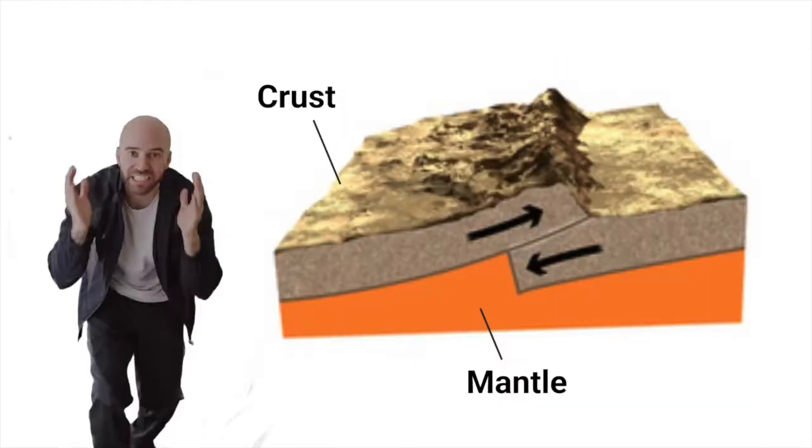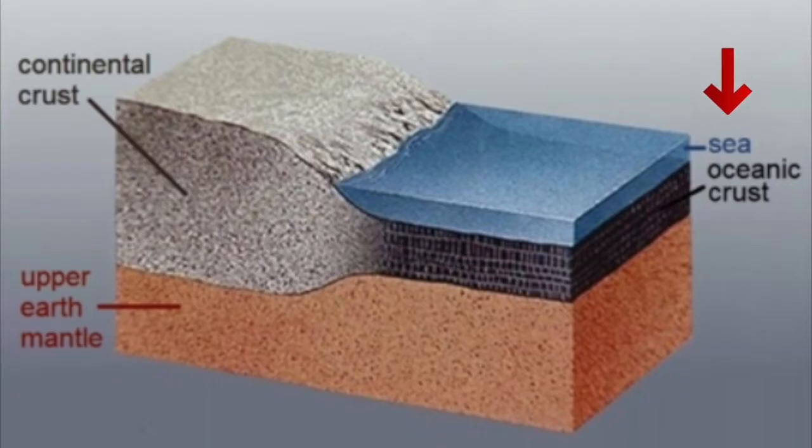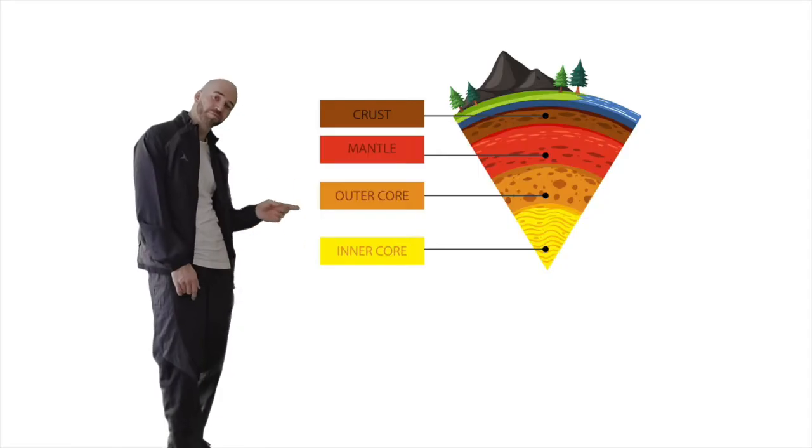Two types of crust on our planet: got the continental and the oceanic. One made of basalt, the other made of granite. Tectonic plates glide across the mantle. Oceanic is thin but dense, under the oceans is where it lives. Continental crust is found on land, not as dense but very thick.